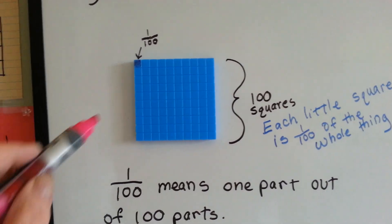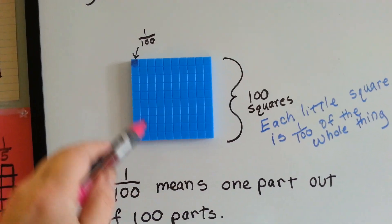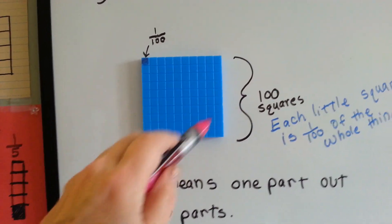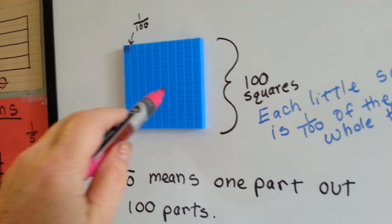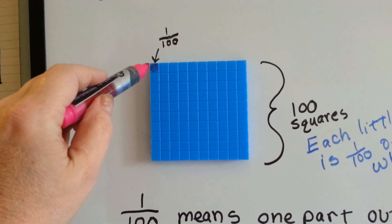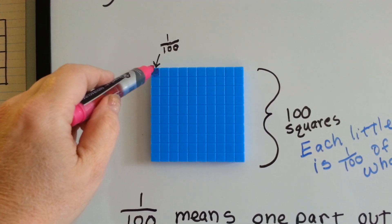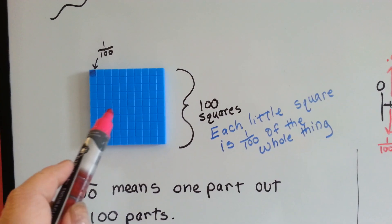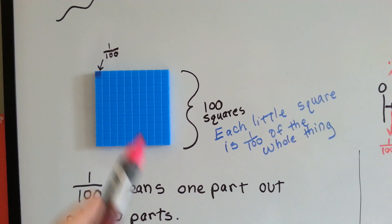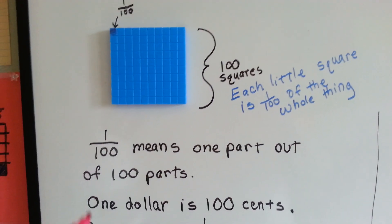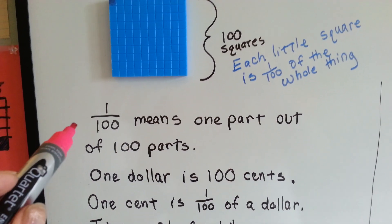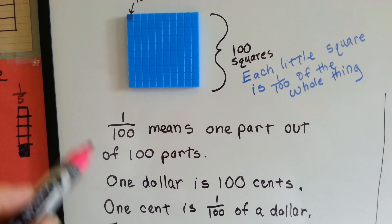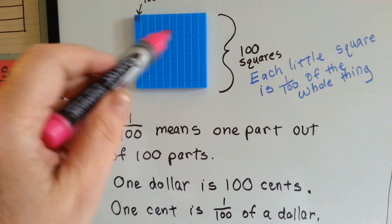For one hundredth, there's a hundred squares on this little model right here. And this little one in the corner is one one hundredth. Out of the hundred squares, each little square is considered one one hundredth of the whole thing. One hundredth means one part out of one hundred parts. That's one little one out of a hundred.